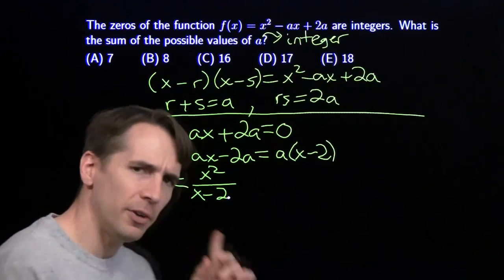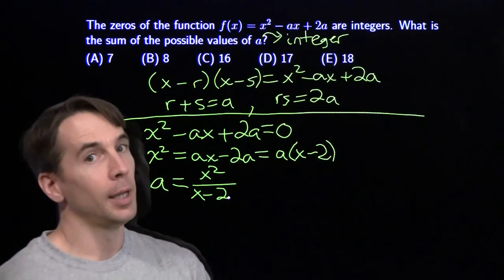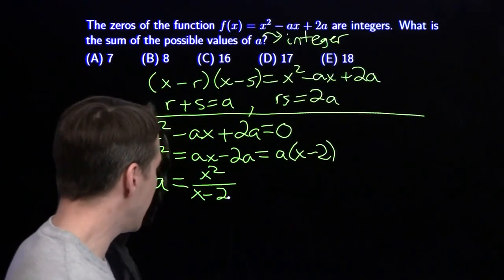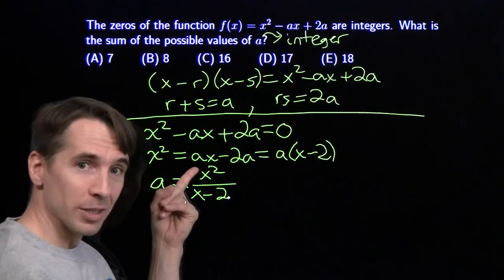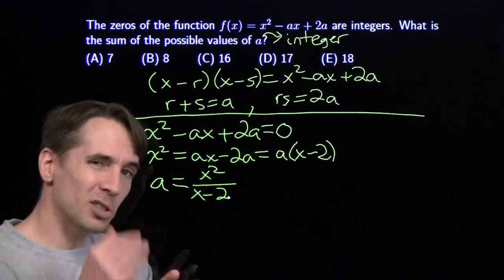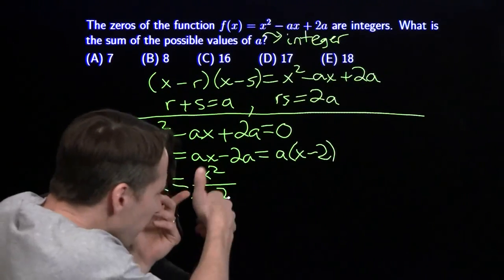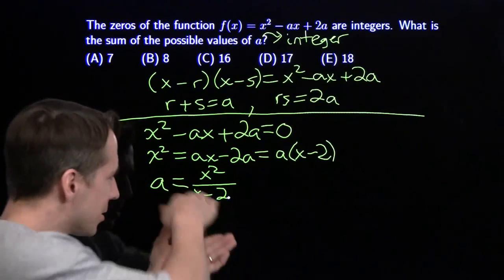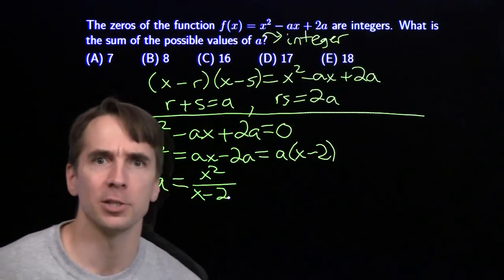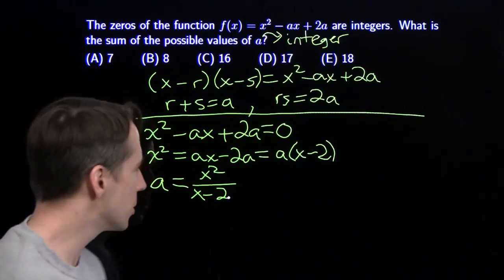But I don't like this fraction at all. It's got a variable expression on top and bottom. I could handle it if I had a constant on top, or if I could do some cancellation with x - 2 as a factor.